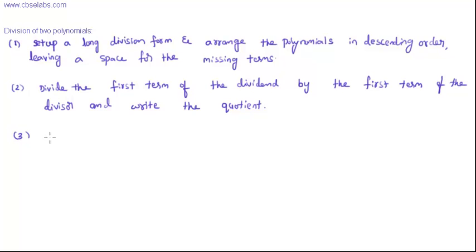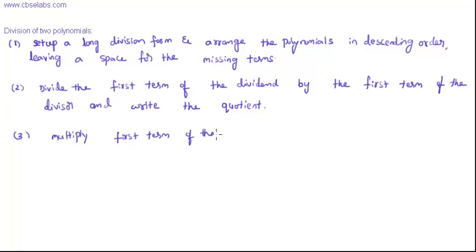The third step is: multiply the first term of the quotient by each term of the divisor.